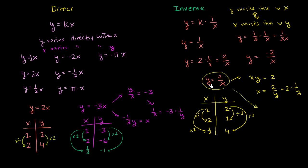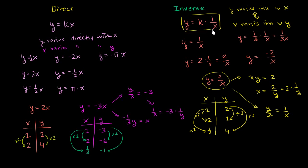We could also divide both sides by 2 to get y/2 = 1/x — there are all sorts of equivalent forms. In general, if you see an expression relating two variables, you can use a table: if scaling up x scales up y by the same amount, it's direct variation; if scaling up x scales down y, it's inverse variation. The surest way is to algebraically manipulate the equation back to y = k·x (direct variation) or y = k/x (inverse variation).